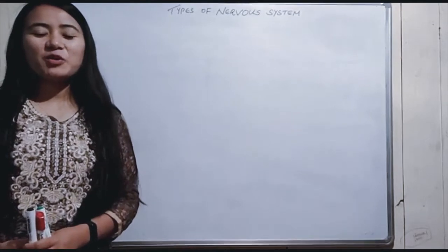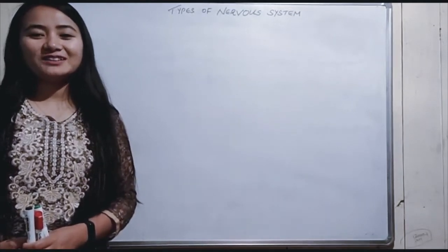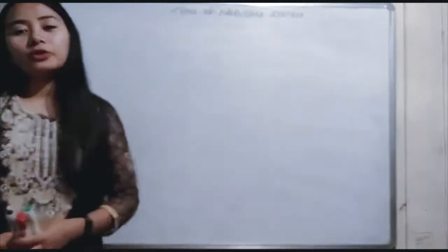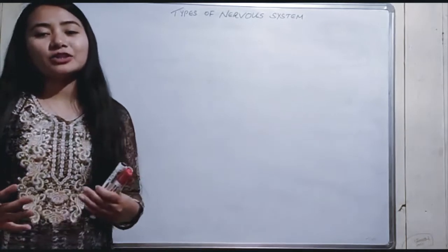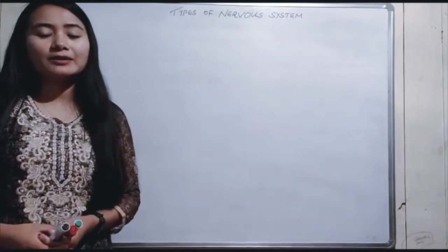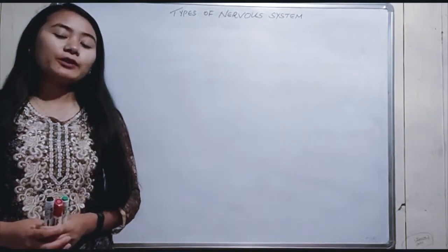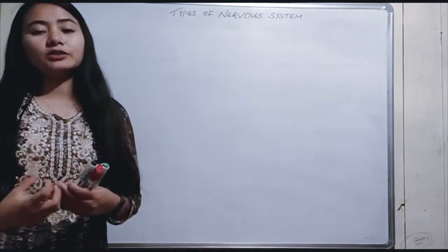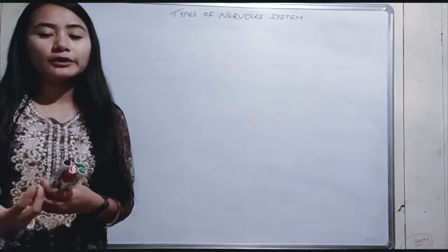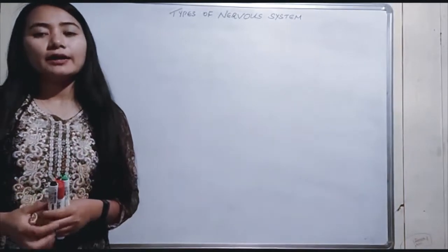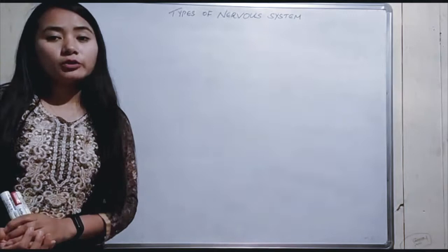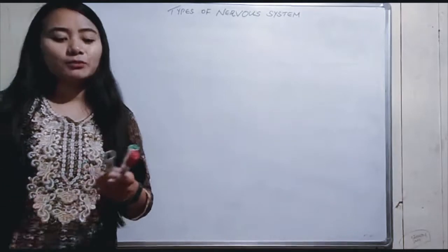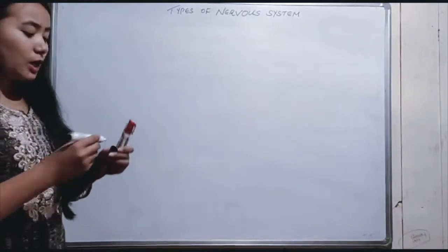Hello everyone, welcome to the Learn from Home program by the Supplementary Volunteer Teacher Organization. Today in this class we are going to learn about types of nervous system. Last class we covered neurons — their structure, different parts like axon, dendrites, cell body — and their different functions, as well as neural control and coordination examples.